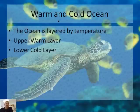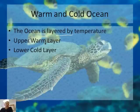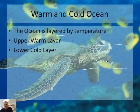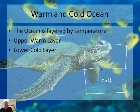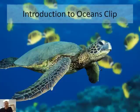Let's talk about warm and cold oceans. The ocean is layered by temperature. There's an upper warm layer, and then there's the cold, dark ocean down below — these layers of the ocean. We'll have a graphic in just a couple of slides that I think you'll want to copy down. Let's watch a quick video clip that shows you an introduction to the oceans that I found on YouTube.